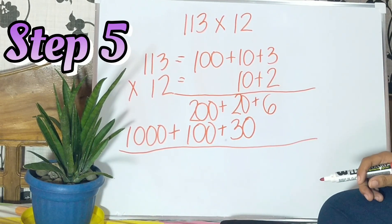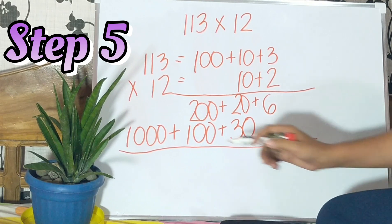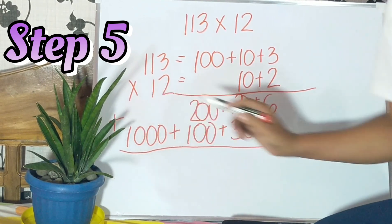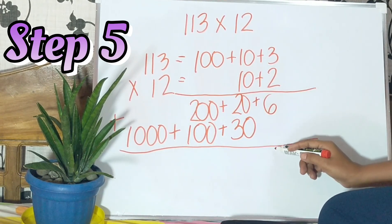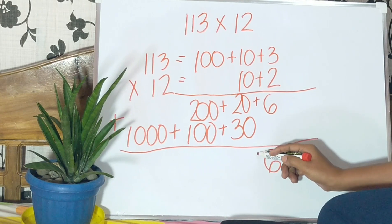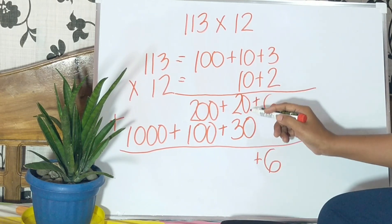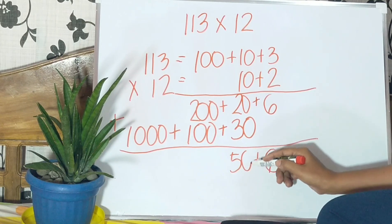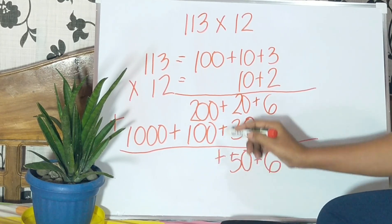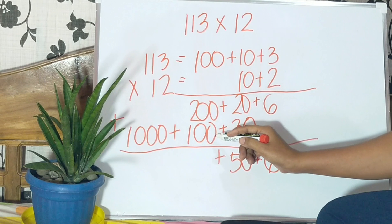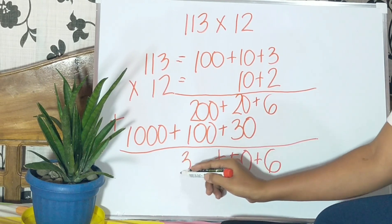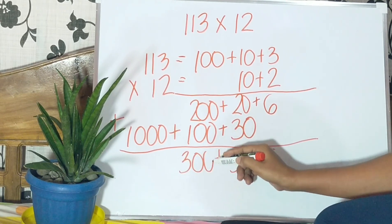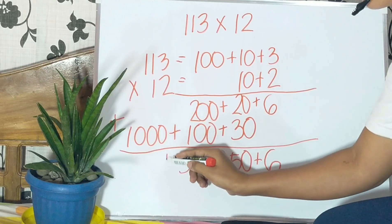Step 5: Add the partial products. We have 6, 20 plus 30 is 50, 200 plus 100 is 300, and 1,000.